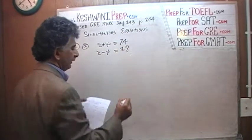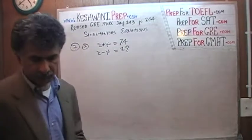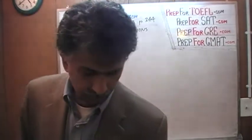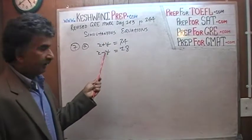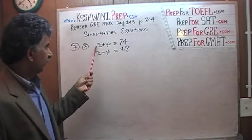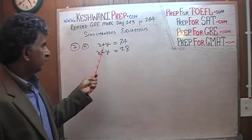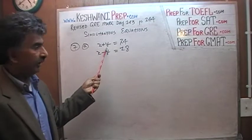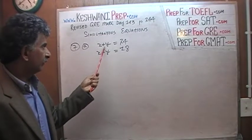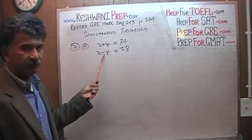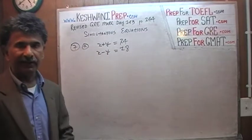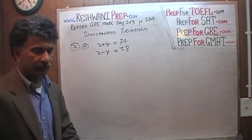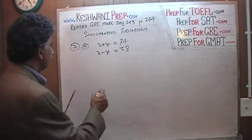It is a very straightforward, simple scenario because the coefficients of the variables are exactly the same: plus 1 and plus 1. And here it is even better — plus 1 and minus 1. They are going to cancel each other out if we add the two equations. So that is what we are going to do.